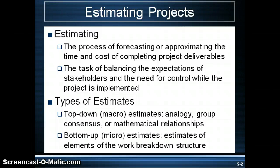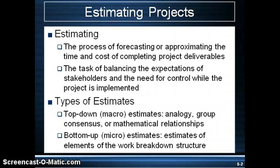There are two types of estimates. There's the top-down method, which is a macro-type estimate. This is typically done at the very beginning, often before the WBS is developed. It is mostly used to present the justification of the project, most often using past data on other projects or high-level estimates based on some preliminary data. The bottom-up estimate is a micro-type estimate, which really requires having the WBS completed and understanding what the work packages are.